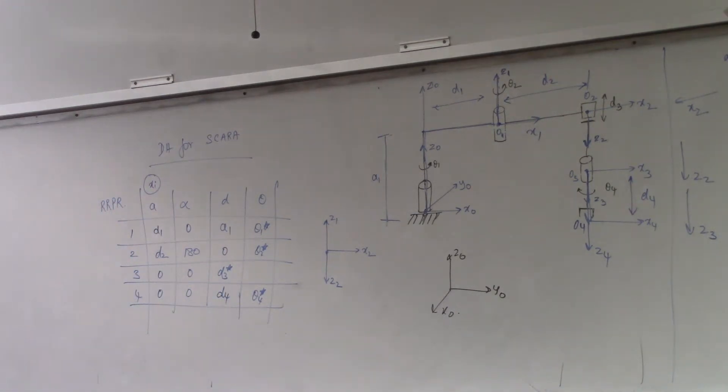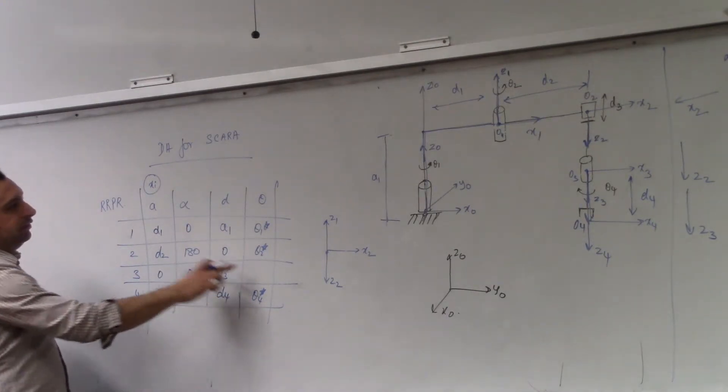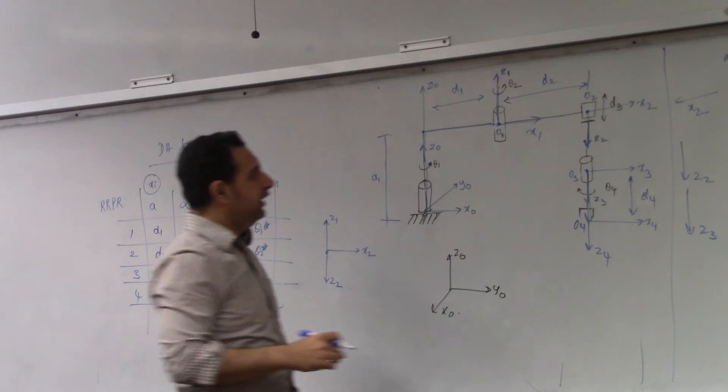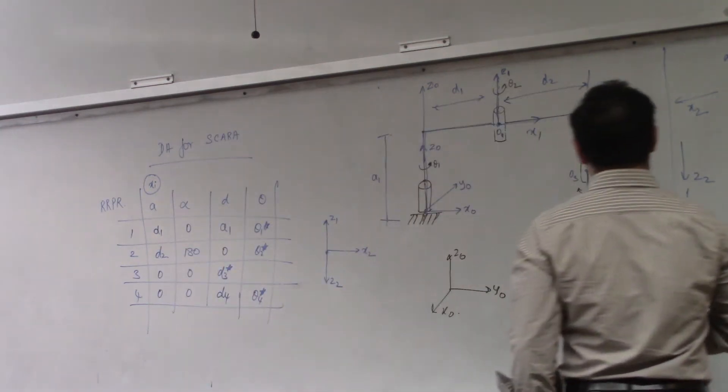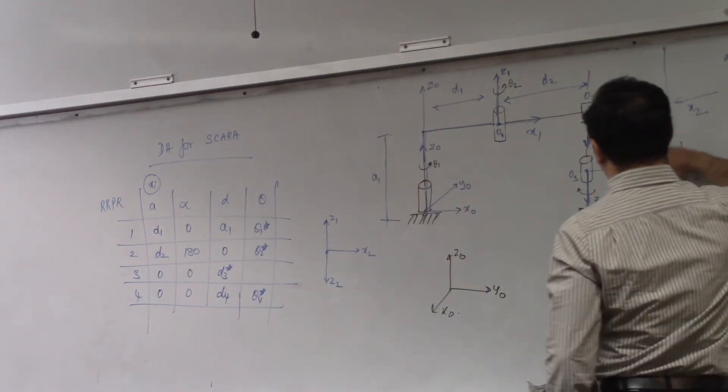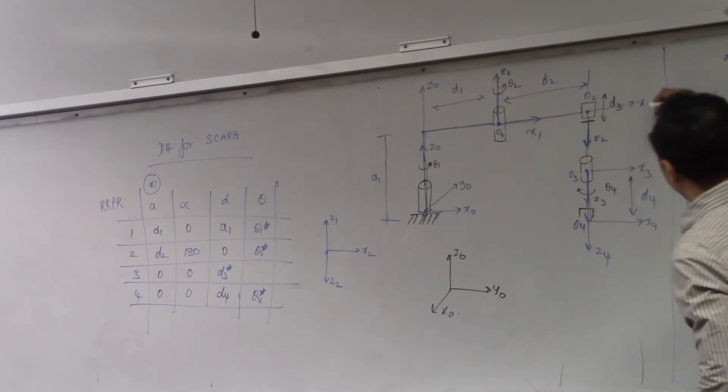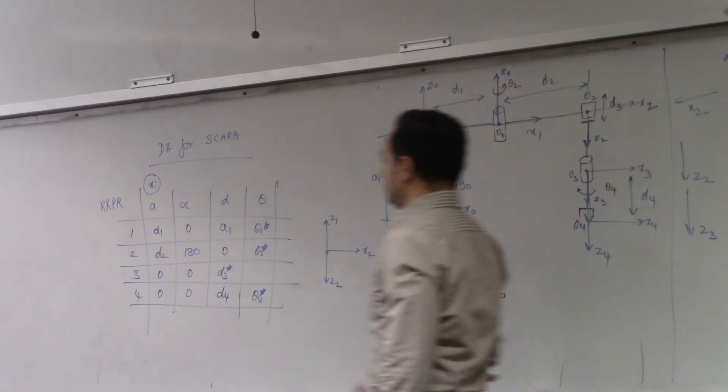We only have to measure one theta, which is theta3. Theta3 will be the angle between X3 and X2. So X3 and X2, here. These two are parallel. So this is going to be zero.